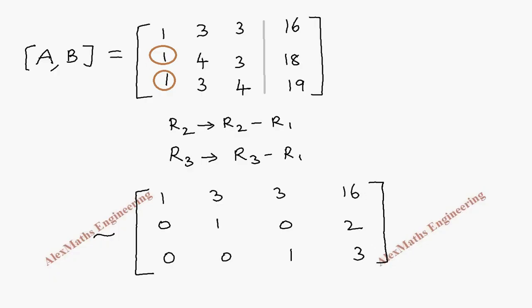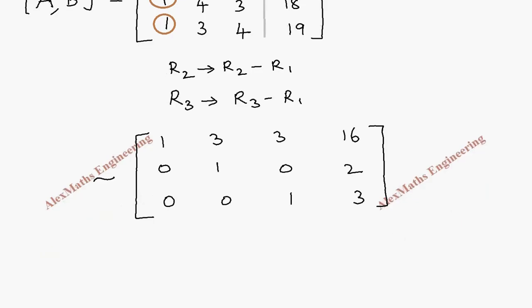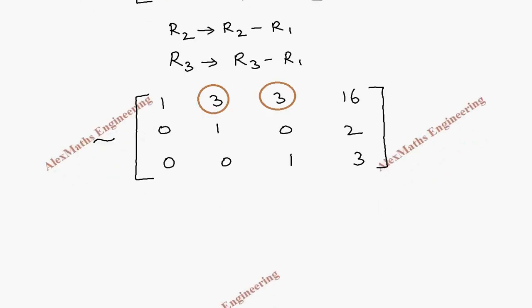Now, we have to make this as a diagonal matrix. So once again, this element and this element should be 0. So for making this r1, we take r1 minus 3 times of r2.